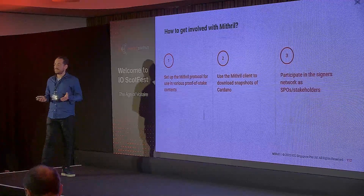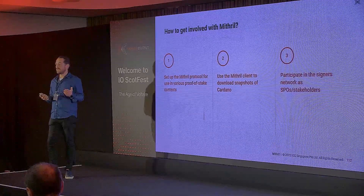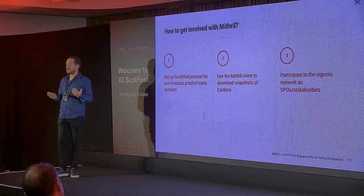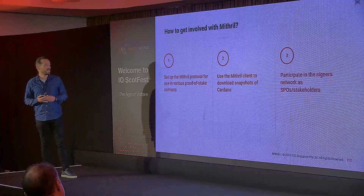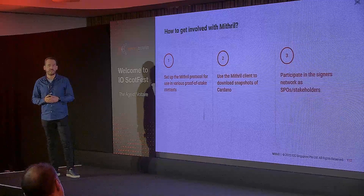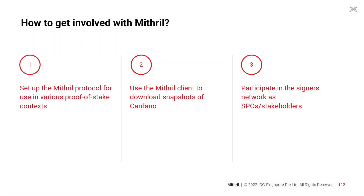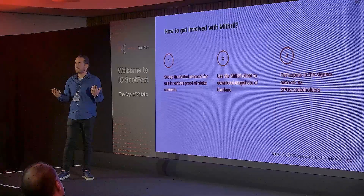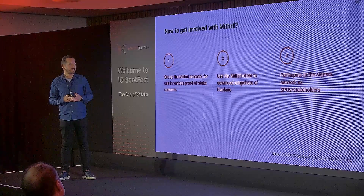If you want to get involved with Mithril, you have many possibilities. The first is to run the Mithril protocol using the standalone cryptographic library, which can run in any proof-of-stake context. The second is to use the Mithril client to download, verify, and restore a snapshot of Cardano. And if you are a stakeholder — a SPO — you can run the signer node, join a Mithril network, and start contributing to the creation of Mithril multisignatures.